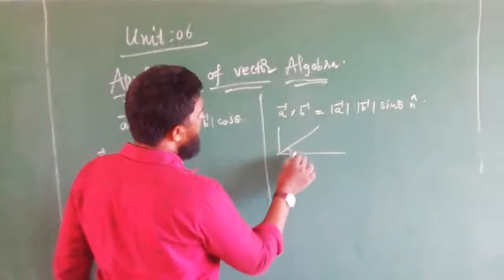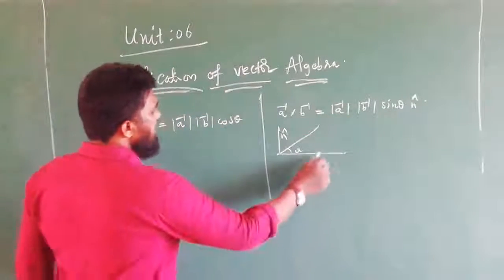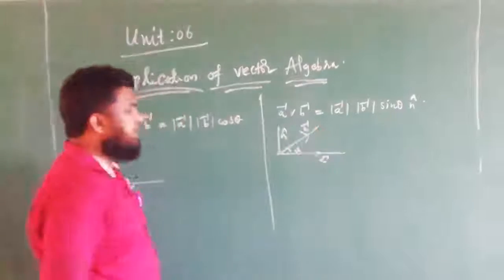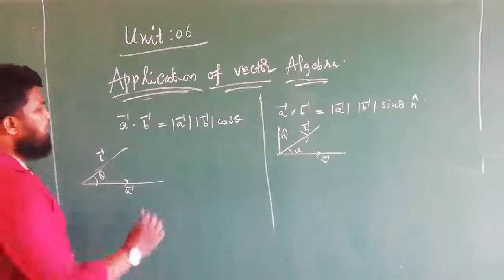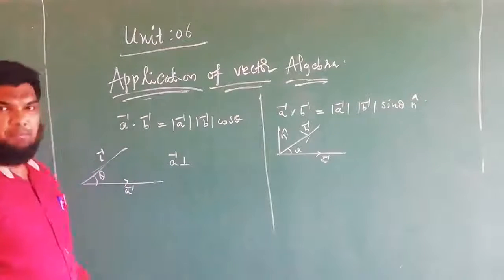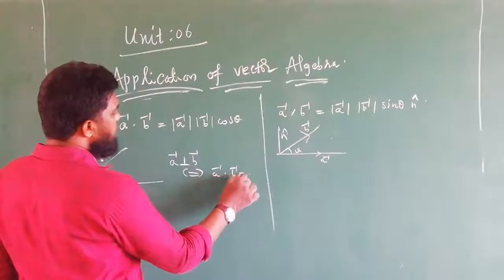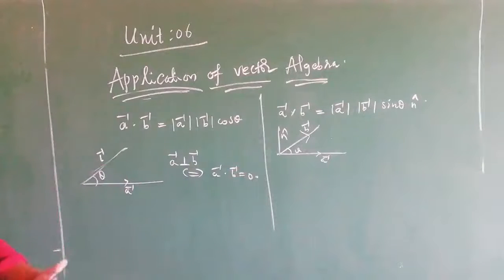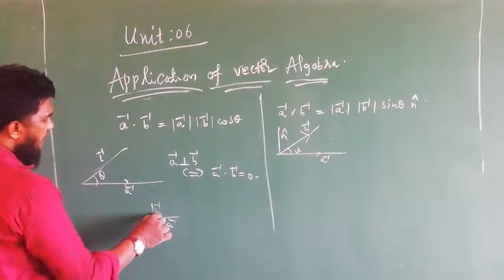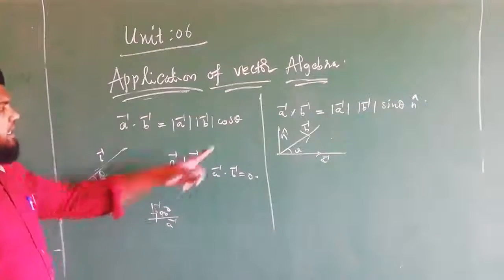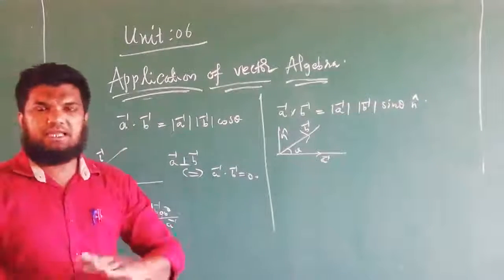We will learn about a unique vector. If a vector A and vector B are perpendicular, then the dot product is zero. This is because when two vectors are perpendicular, the angle between them is 90 degrees, and the value of cos 90 degrees is zero. That is why the dot product is zero.